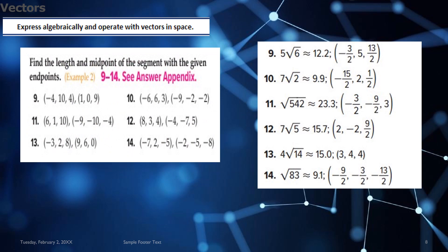Moving on for question 9 to question 14, where you have to express algebraically and operate with vectors in space. The answer key is provided on the right here. You see 9, 10, 11, 12, 13 and 14. So first you have to find the length and then you have to find the midpoint. So we have used distance formula for this question. And here are the answers. You can see it on the right side of the screen.